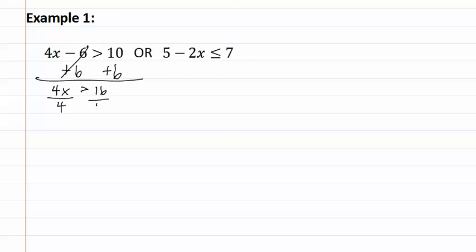We then divide both sides by four giving us x is greater than four. Or we solve the second one by subtracting five which gives us negative 2x is less than or equal to two.